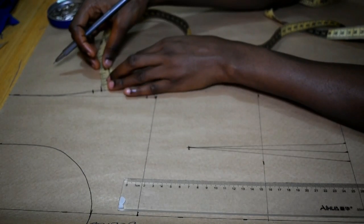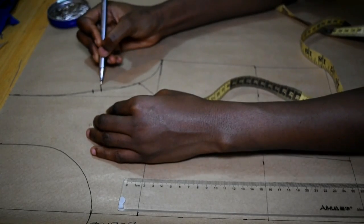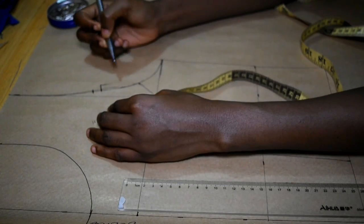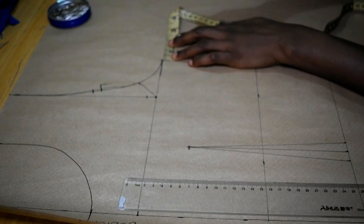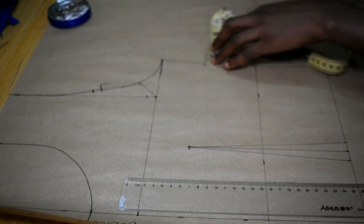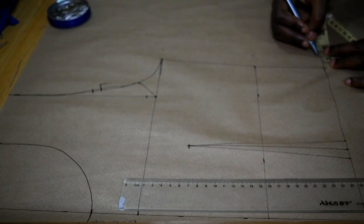So half inch front bodice, one inch back bodice - half inch - and then draw the curve or the line. It should be parallel to that curve and it should meet your extra one inch allowance.